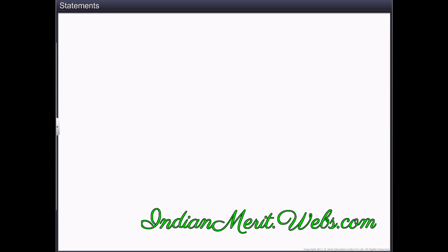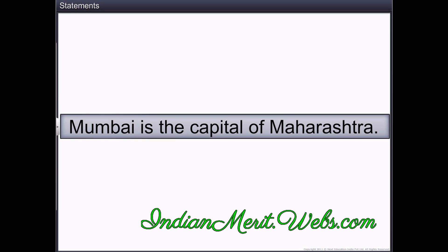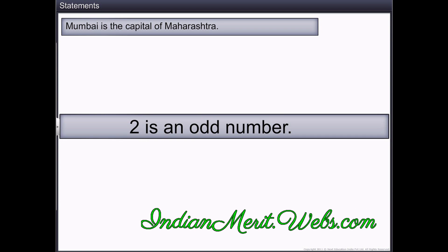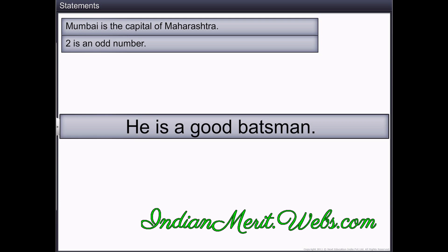Let's look at some sentences. Mumbai is the capital of Maharashtra. 2 is an odd number. He is a good batsman.